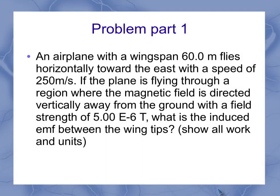In this problem, you have an airplane with a wingspan of 60 meters, which is flying horizontally towards the east with a speed of 250 meters per second. If the plane is flying through a region where the magnetic field is directed vertically away from the ground with a field strength of 5 e to the minus 6 Tesla, what is the induced EMF between the wingtips?